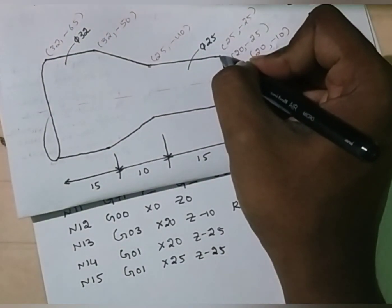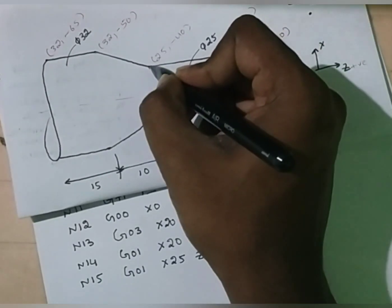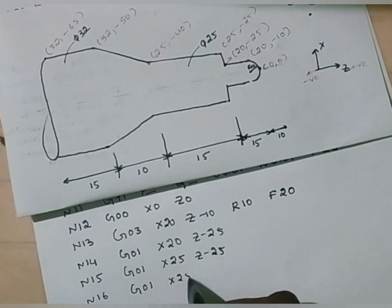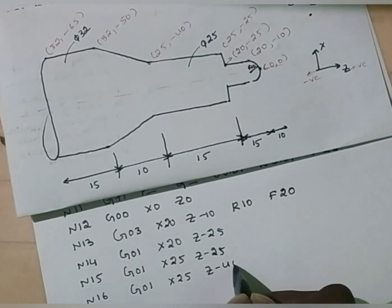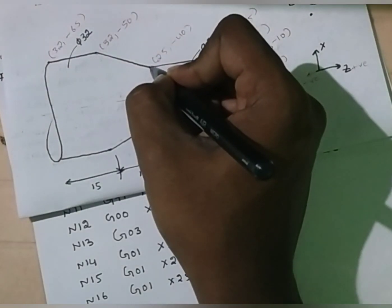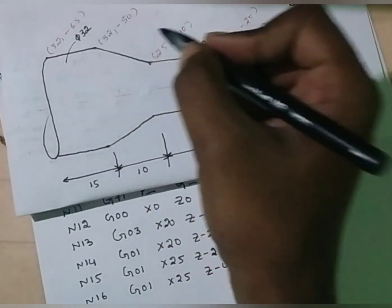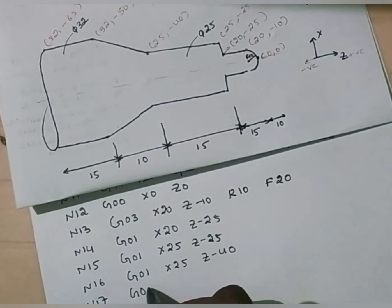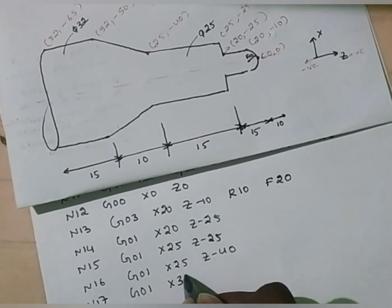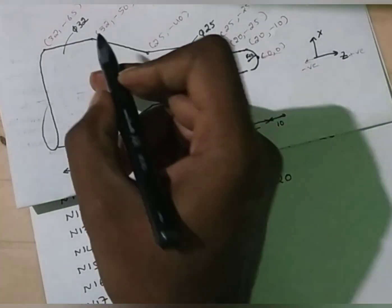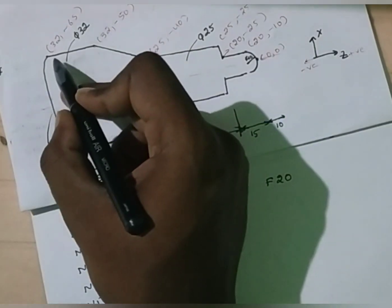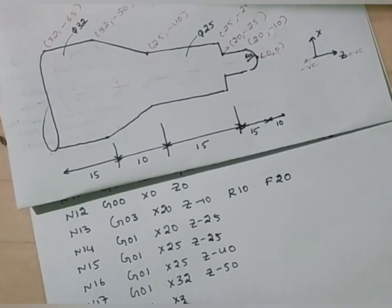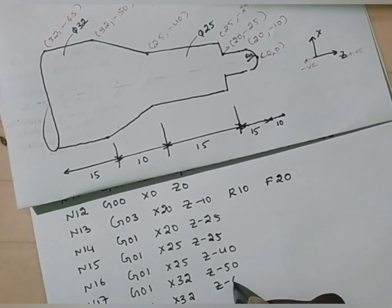Now the tool is here. We have to move the tool from this point to the next — that is linear. N16, G01, X25, Z minus 40. Now the tool is here. We have to move the tool from this point to the next — again linear. G01, X32, Z minus 50. Now the tool is here. We have to move the tool from this point — N18, G01, X32, Z minus 65.